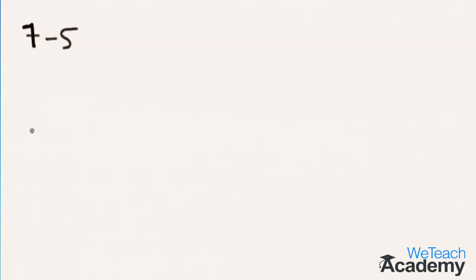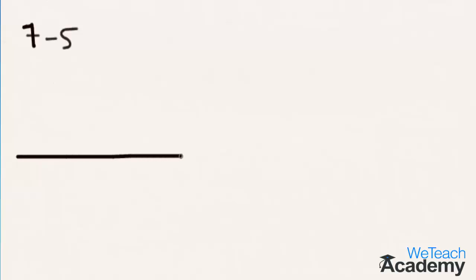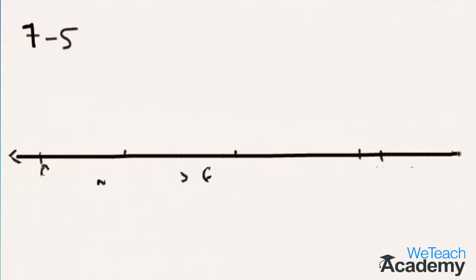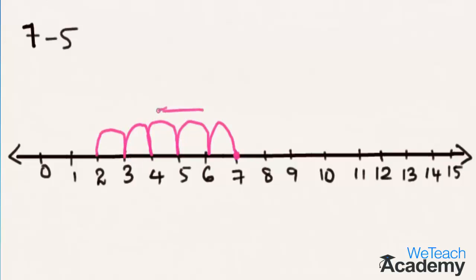This is nothing but 7 minus 5. This can be shown on a number line — here we have a number line from 0 to 15. To subtract 7 minus 5, we start from the number 7 and move 5 steps towards the left, since we are subtracting. We reach the number 2, so 7 minus 5 is equal to 2.